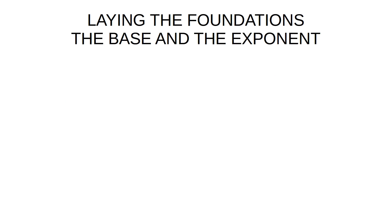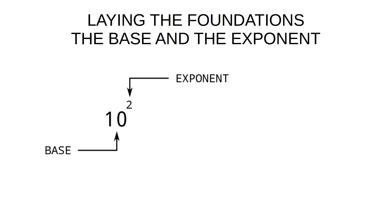Let's have a look at the base and the exponent. The base is easy — it's the number base, the base of the number system. For instance, decimal has ten numbers, zero through to nine. That's the base. So decimal is a base ten number system, because it has ten numbers. Binary is a base two number system, because it has two numbers — zero and one. And hexadecimal is a base sixteen number system, because it has sixteen numbers.